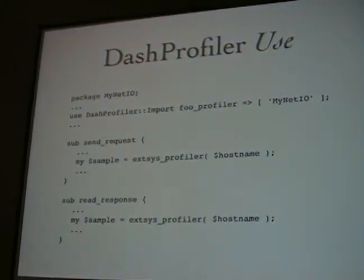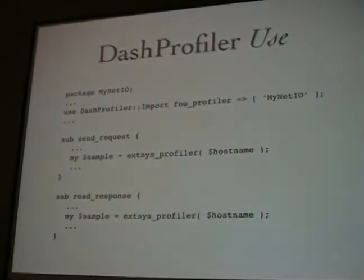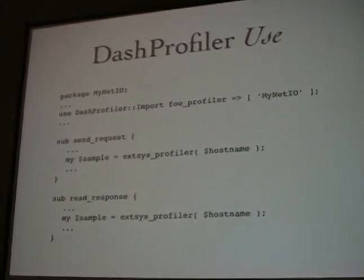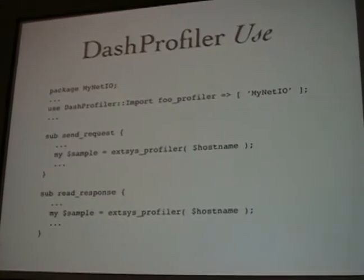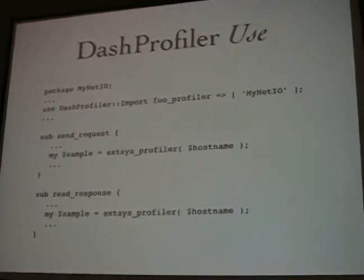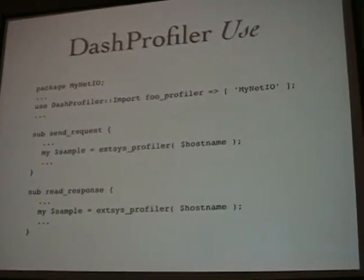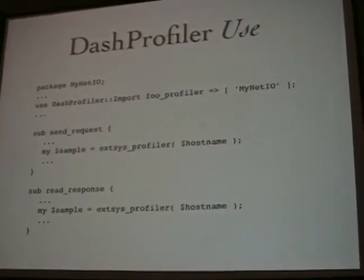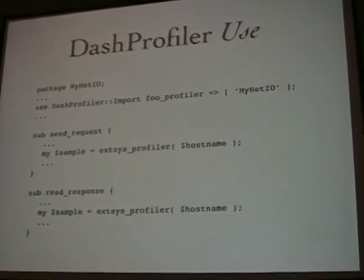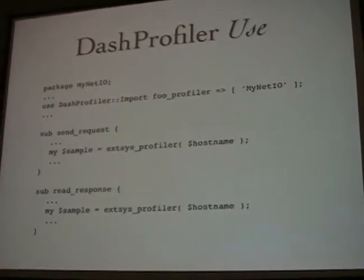What the importer does is it imports a pre-curried profiler that is extremely efficient at returning you an object that captures what the profiler is, but also the time that you created the object. Then all you have to do to finish the sample is just let the object destroy itself — let it fall out of scope. So you get a time measurement from the point that you called the profiler to the point that the profile object goes out of scope. That's the amount of code you need to write to instrument your I/O.